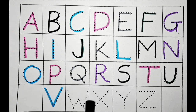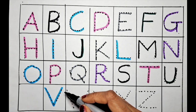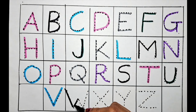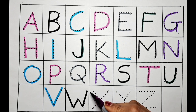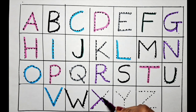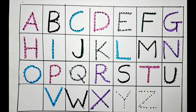Let's do the W with the black color. W for watch. Next is X. Let's do the X with the purple. X for Xmas tree.